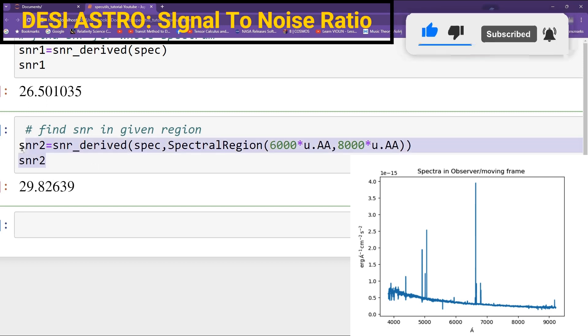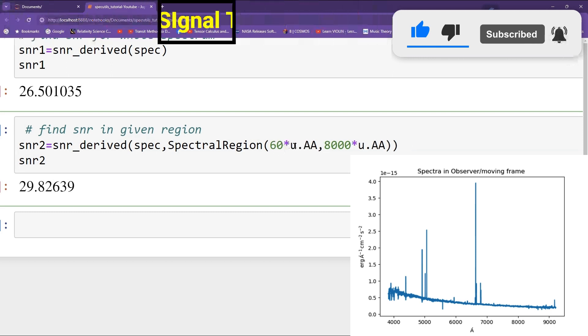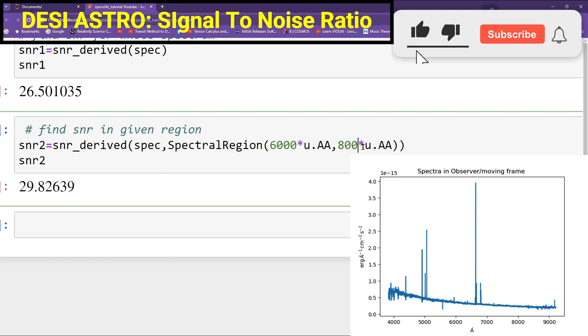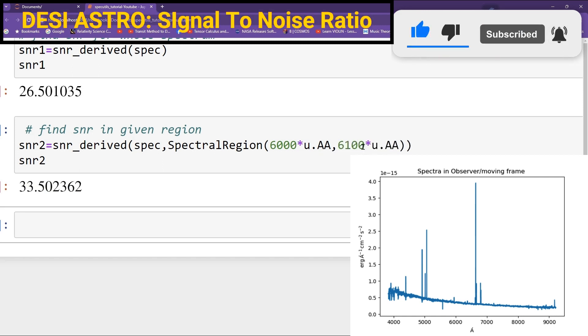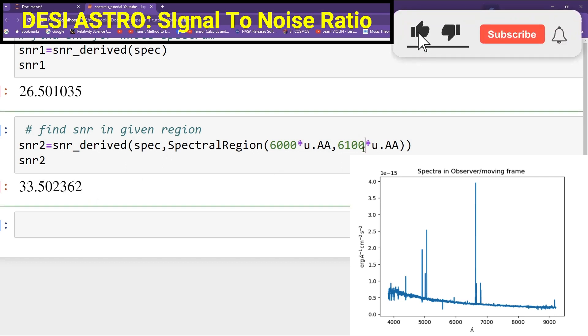This way you can find SNR in any region. Suppose you want to go to very narrow region, 6,000 to 6,100 EUR. You can see SNR is increasing. You can maybe go to 6,010. This way you can find SNR in the given region of the Spectra.